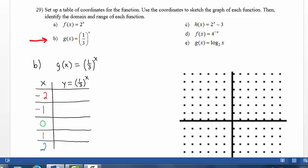When x is negative 2, we replace the x variable with the value negative 2. This gives us 1 third raised to the negative 2 power. Since a negative exponent means reciprocal, we have 3 divided by 1 to the positive 2 power, or 3 squared, which is 9.